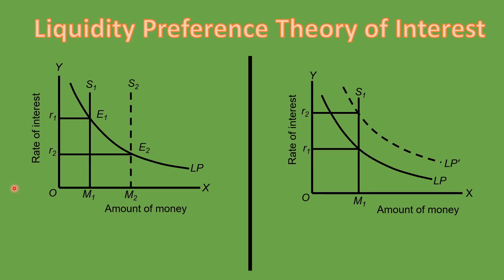When the rate of interest is determined by income, this gives us the rate of interest equilibrium. S1, the supply of money, is determined by the government or central bank and is represented as a vertical line. When Lp and S1 intersect at point E1, the equilibrium rate of interest R1 is determined.